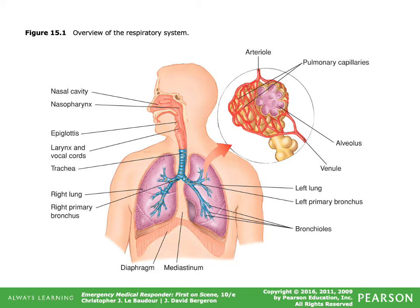This is an overview of the respiratory system. Starting at the top: the nasal cavity is where your nose is. Just behind where the black line stops, you'll see the turbinates — they humidify your air. The nasopharynx is at the very top of the back of the throat. The epiglottis is down past the base of the tongue. The larynx and vocal cords act as the gatekeeper to the trachea, keeping foreign objects and substances out.